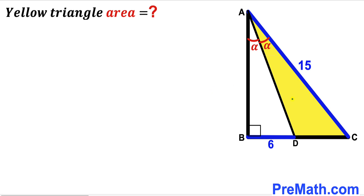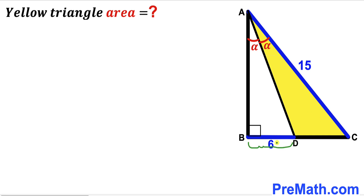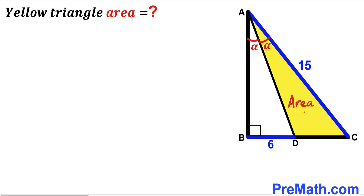Welcome to PreMath. In this video we have got this right triangle ABC along with this angle bisector AD, such that angle BAD is alpha and likewise angle CAD is alpha as well. As a result we are ended up with this yellow shaded triangle ACD. This segment BD is 6 units whereas side AC is 15 units. Our task is to calculate the area of this yellow shaded triangle ACD.